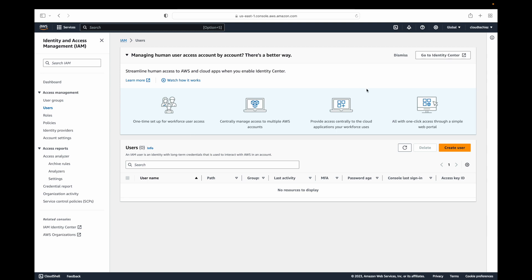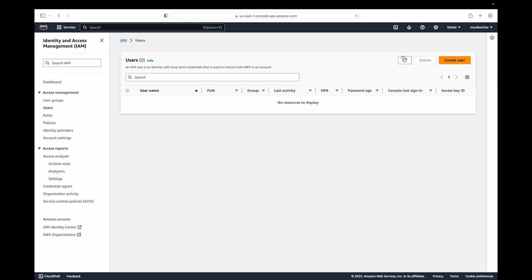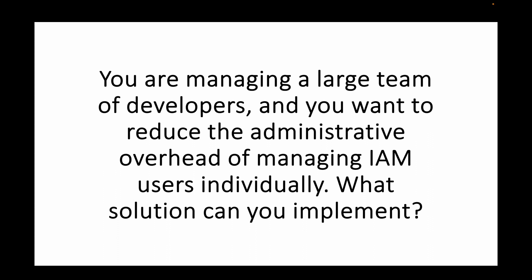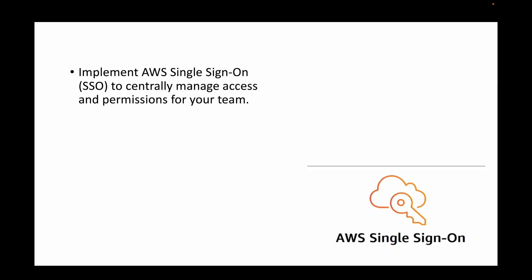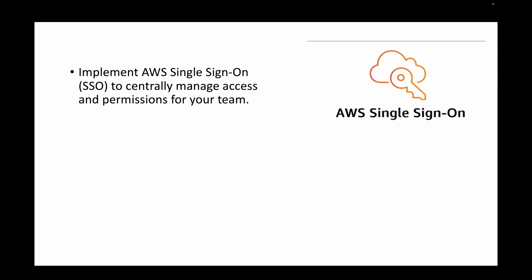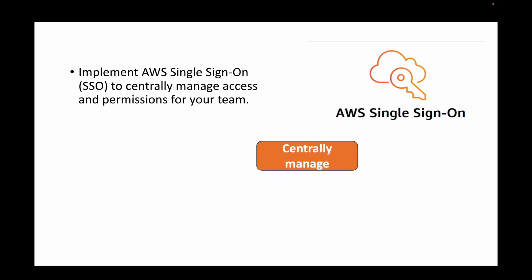The next question is: you're managing a large team of developers and you want to reduce the administrative overhead of managing IAM users individually. What solution can you implement? Instead of managing users individually, you want to manage them from a central place and reduce overhead. For this, you can implement AWS SSO — Single Sign-On — which helps you centrally manage your users and permissions for your team.